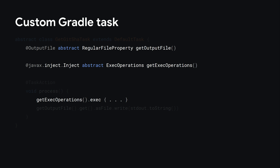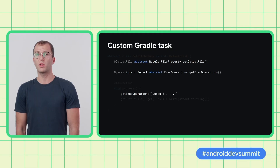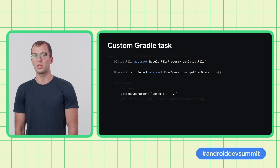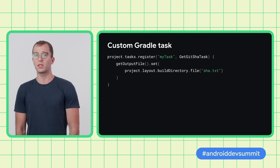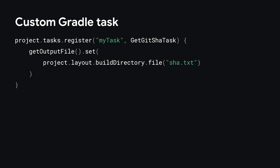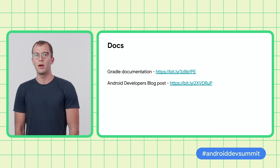Let's see how we can fix this. We can store pieces of information that we need in task properties, and those will be stored in the configuration cache. We can also rely on Gradle-injected services that allow us to execute external processes. Here is a version of the task that is compatible with configuration cache: we capture the output location in a property configured during task registration, and the injected Gradle service is used to launch the Git command. The output location is set during task registration. As a plus, Gradle lazy properties are live, and any changes to the project build directory will be automatically reflected in the output location of the task. To learn more about configuration cache, please check out the Gradle documentation and the article which describes how to migrate your build.